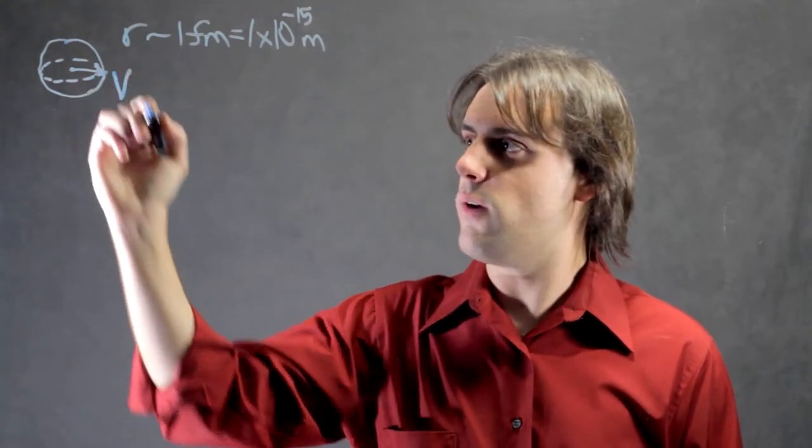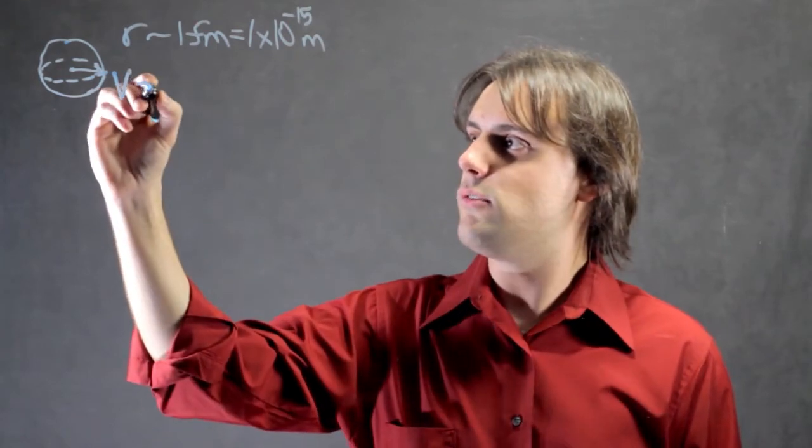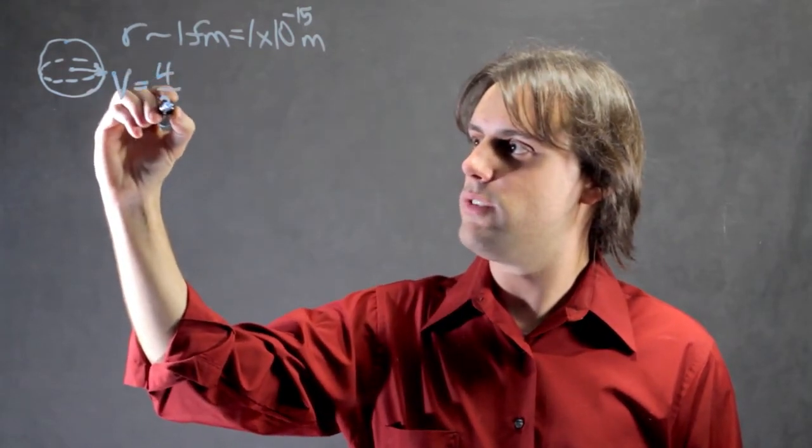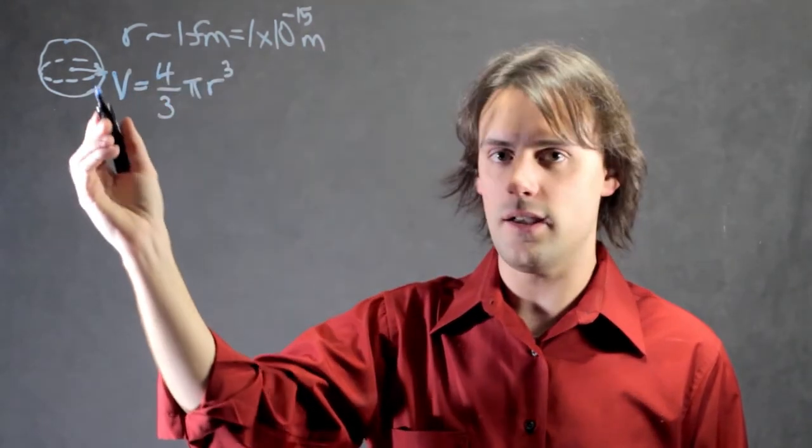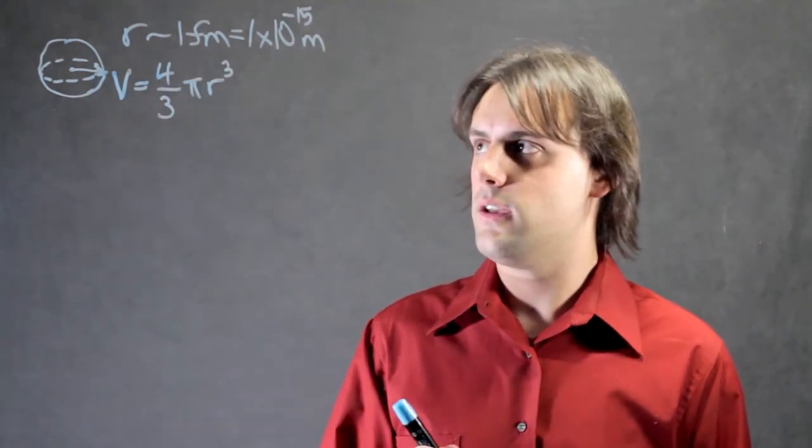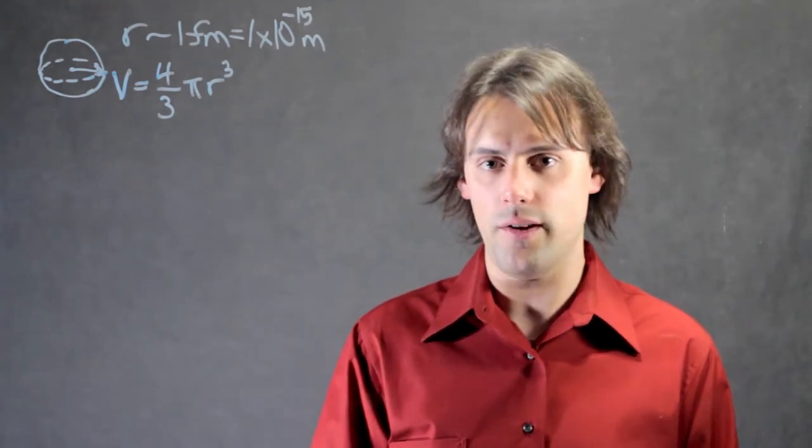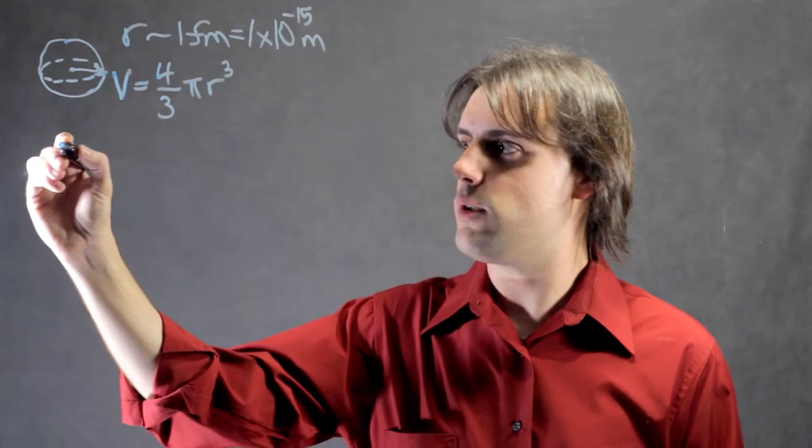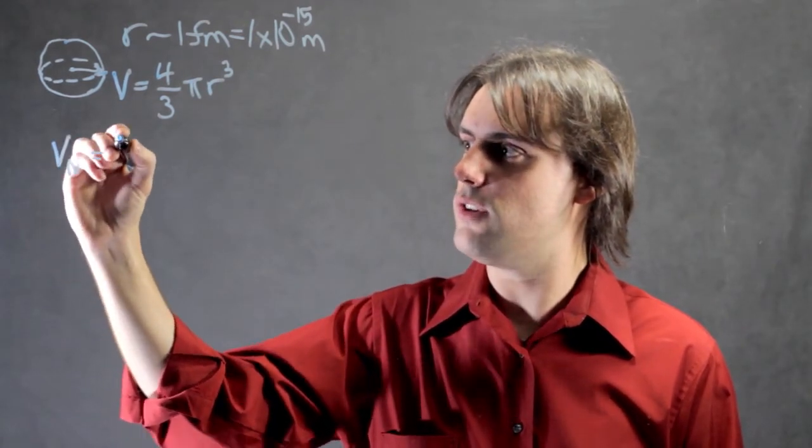The equation for the volume of a sphere or a ball is equal to 4/3 pi r cubed, where r is the radius of the sphere. In the case of the neutron, if its effective radius is one femtometer, then we can calculate the volume of the neutron in units of femtometers cubed.